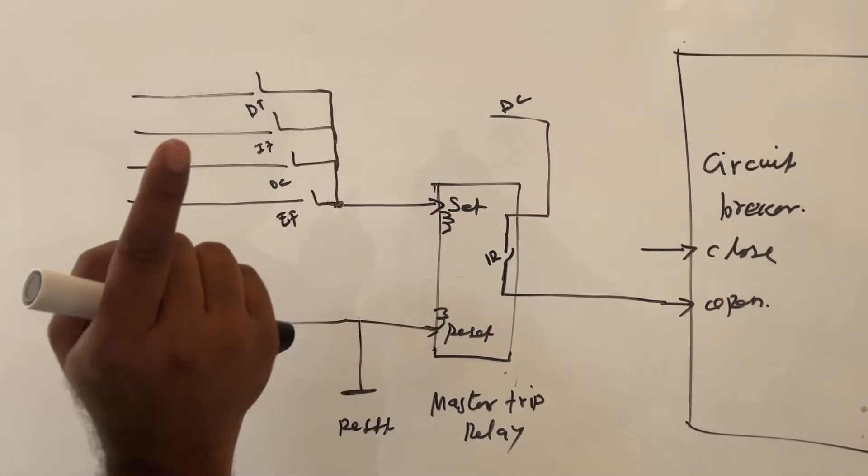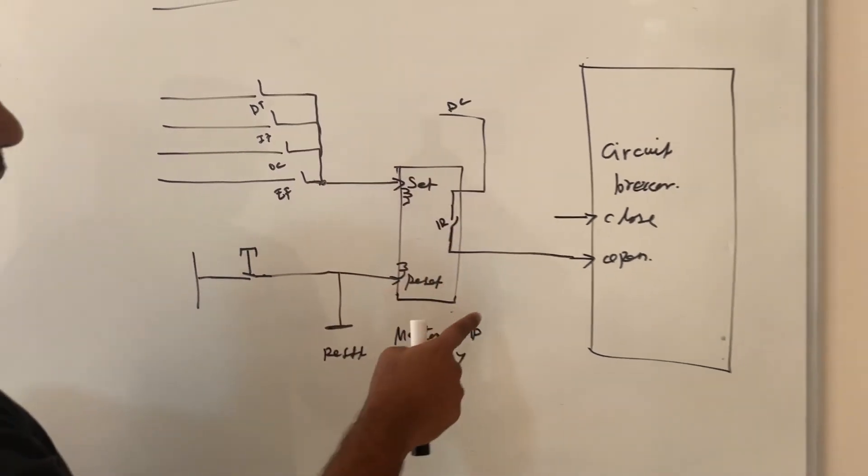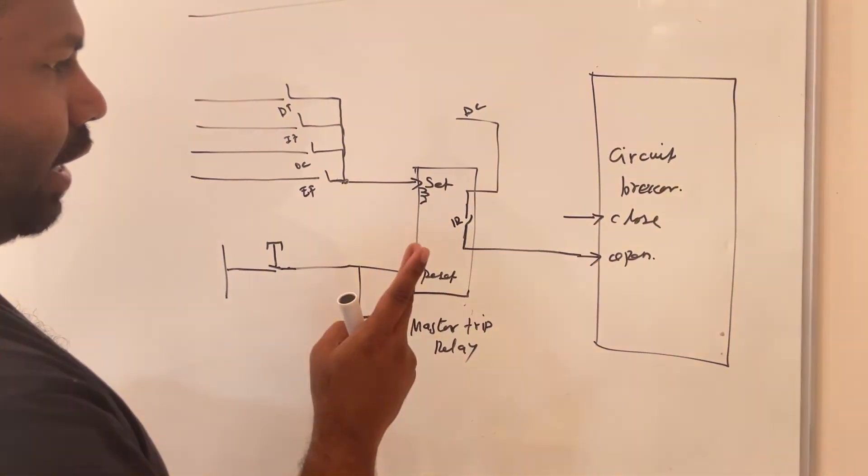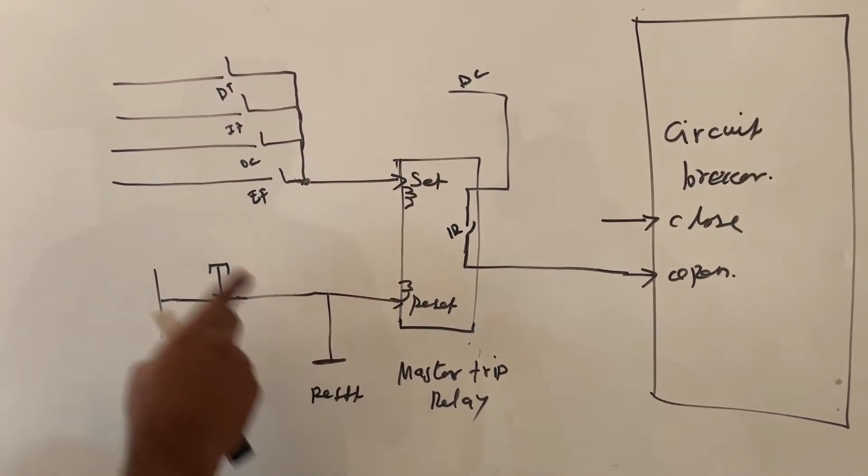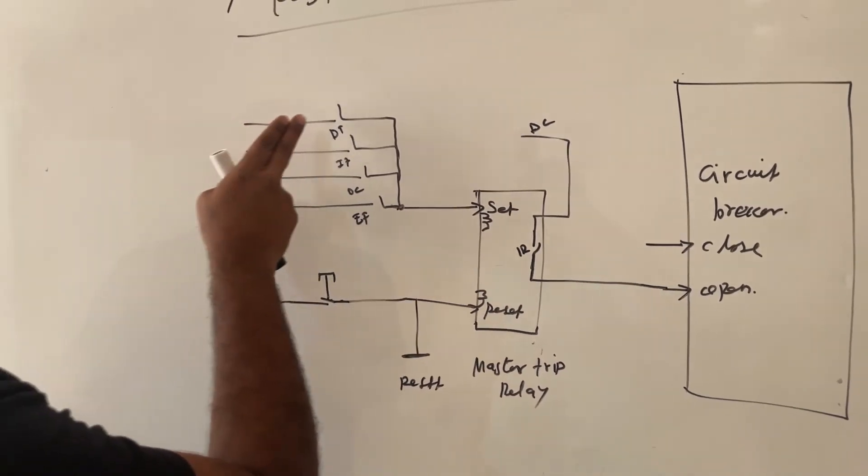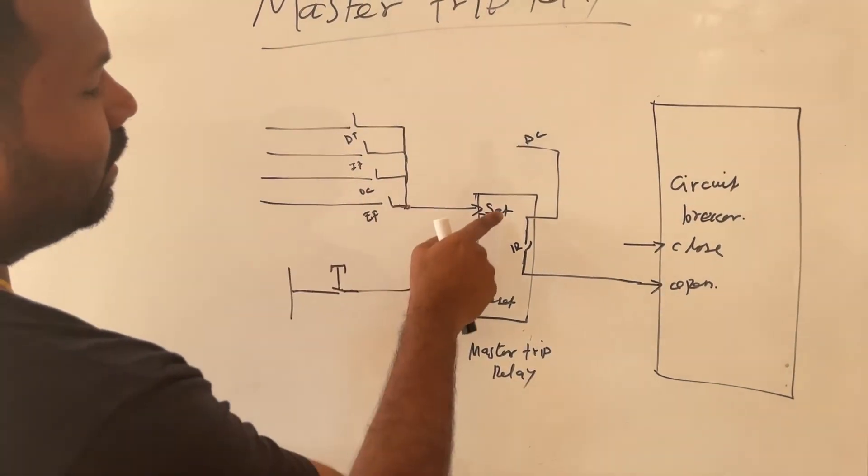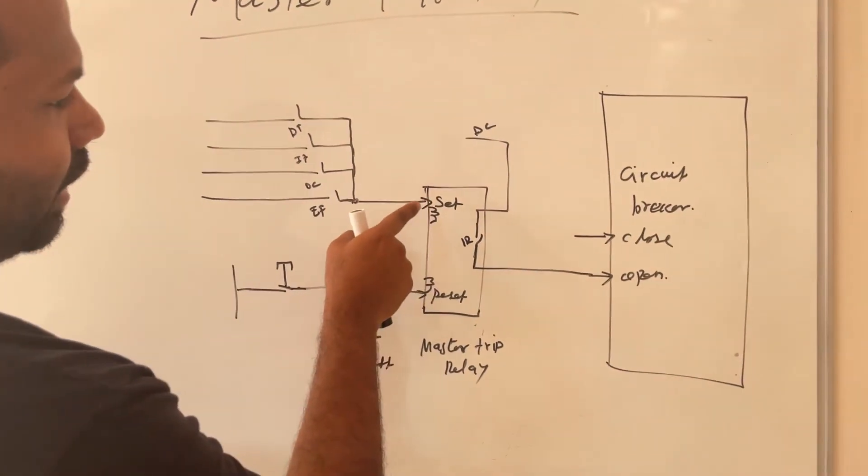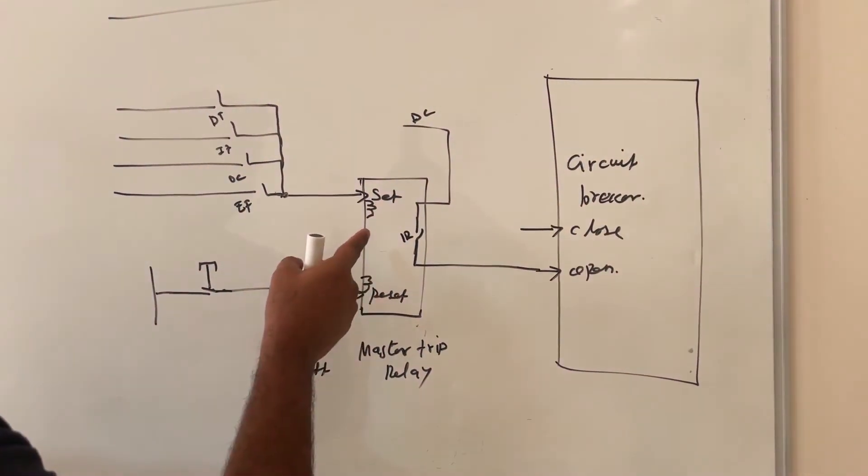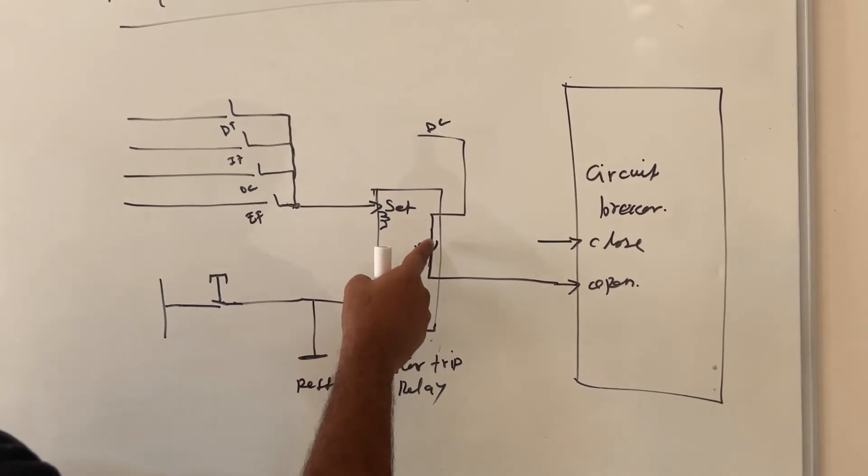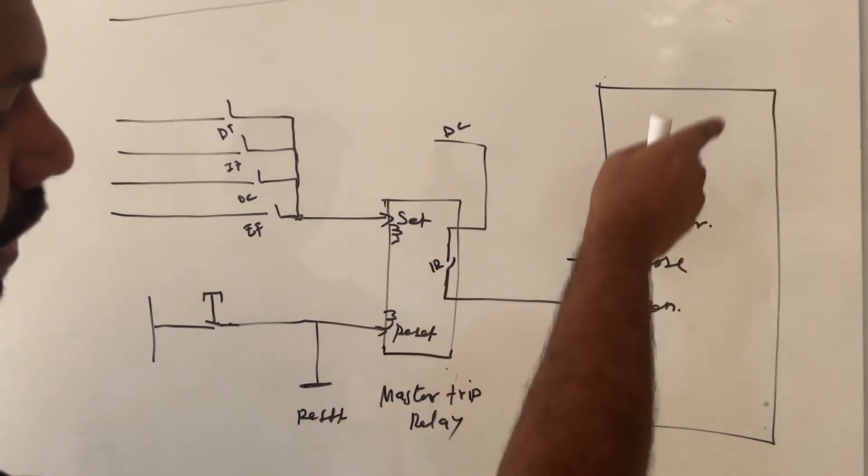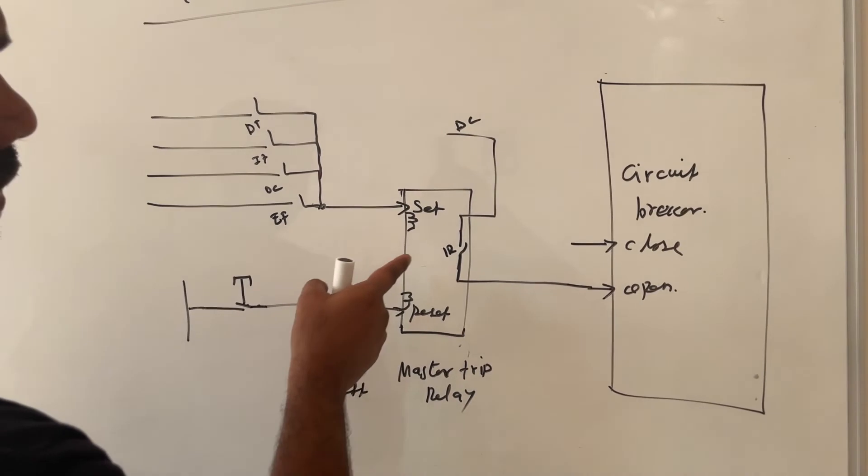This master trip relay will have two coils as I told you: one is set coil, another is reset coil. Once any external relay is activated, this will give signal to the set coil. Instantly this relay will activate, this relay will close the NO contact and it will open the breaker.